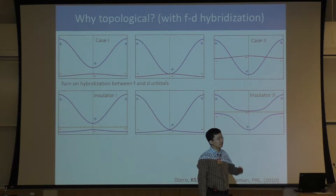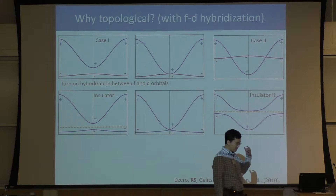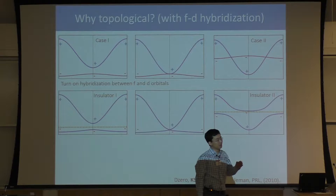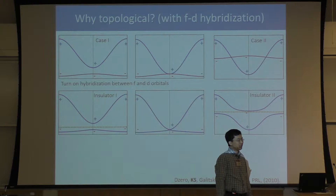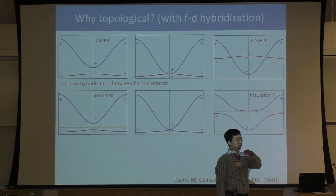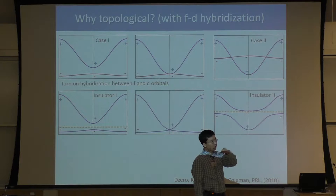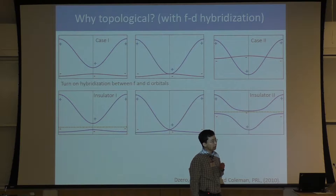In the Kondo picture, the localized electron totally cannot move. But in many real materials, if you consider the Anderson lattice model, they still have a small hopping — pretty much localized, but not totally localized. If you think about this localized electron as totally localized, that's the Kondo lattice model. But if you allow this localized electron to have a small hopping, that's the so-called Anderson lattice model.